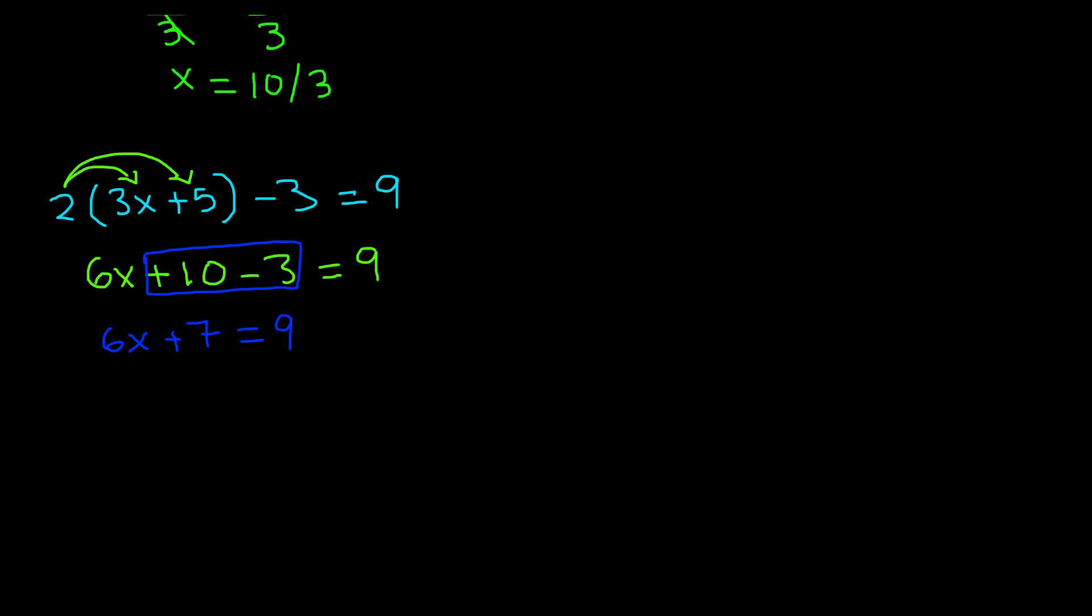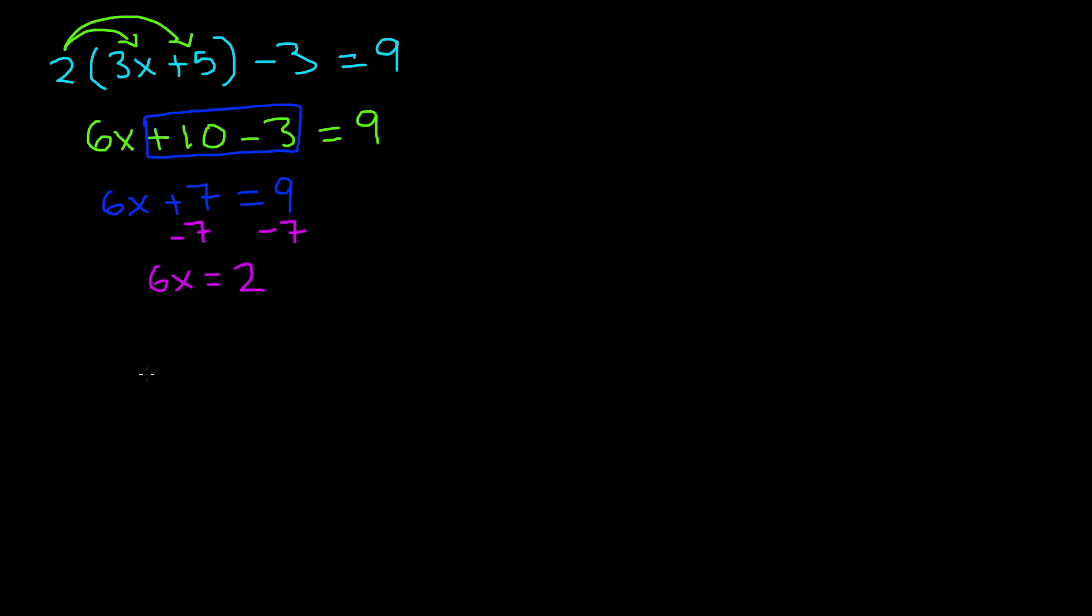First do addition or subtraction. We have addition in this case, so the inverse of addition is subtraction. So we're going to subtract 7 from both sides. So we're left with 6x is equal to 9 minus 7, which is 2. Now the last step is that we have to multiply or divide.